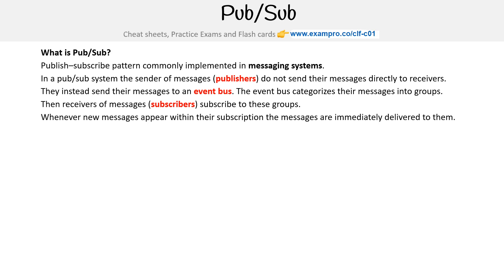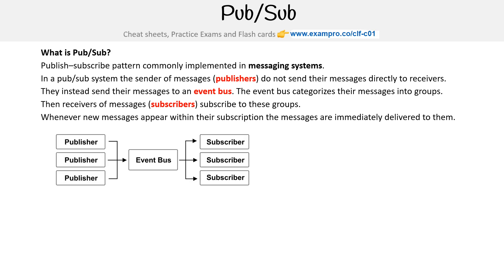Whenever new messages appear within their subscriptions, the messages are immediately delivered to them. The idea is you have publishers, event bus, and subscribers. Event buses appear more than once — it actually appears in streaming, appears in this pub/sub model, and then it can appear in other variations. So you're going to hear the word event bus more than once.